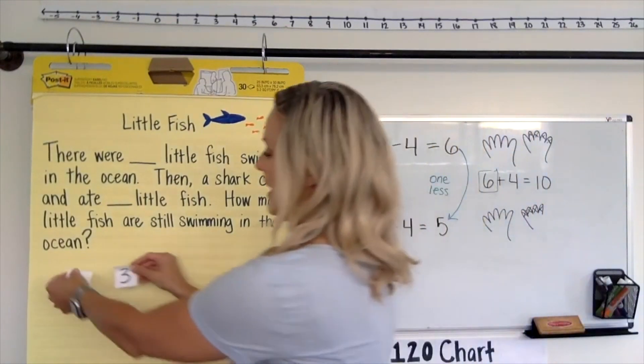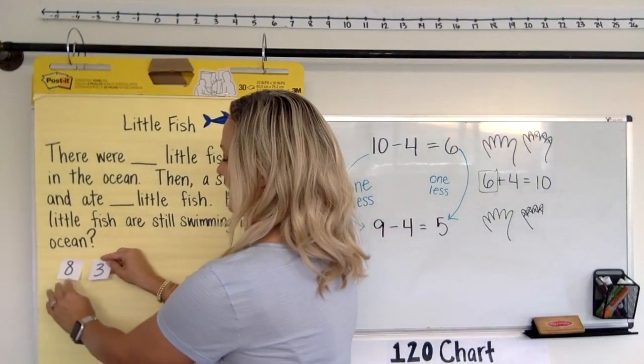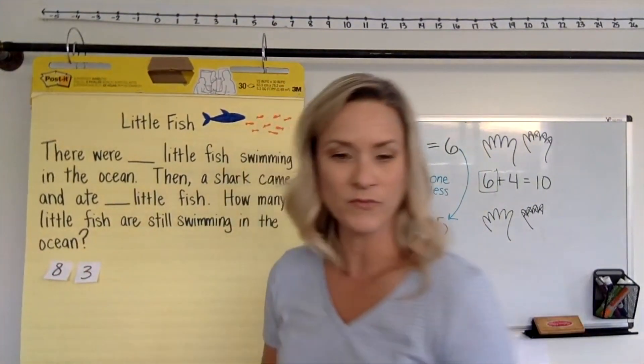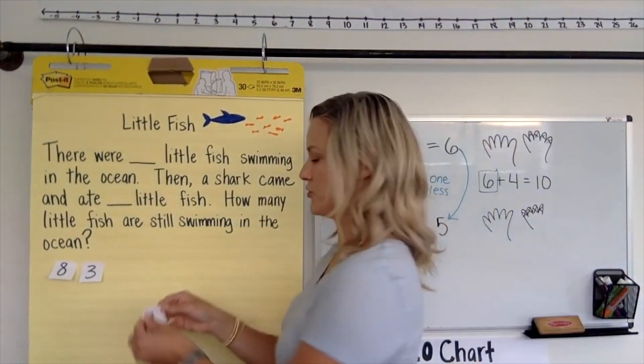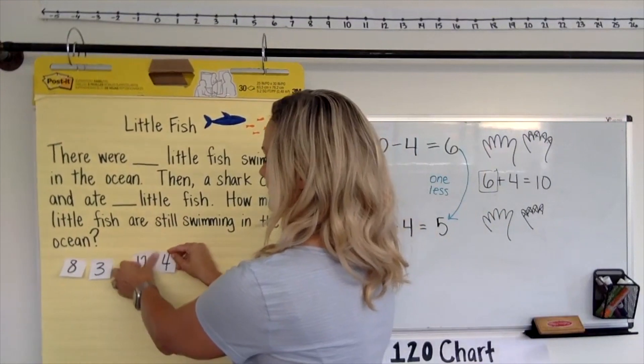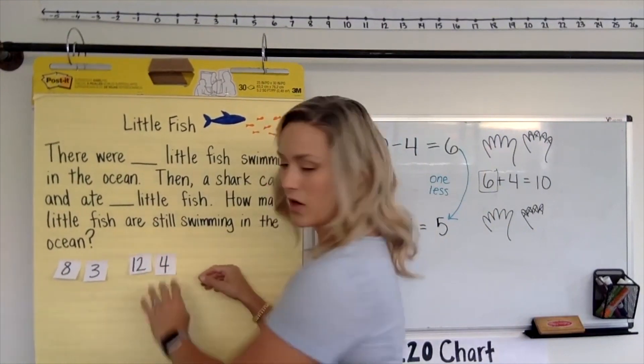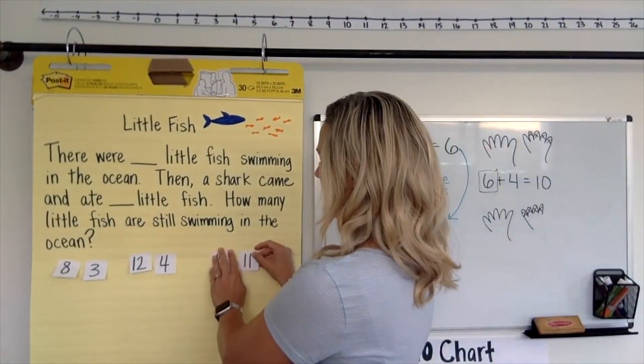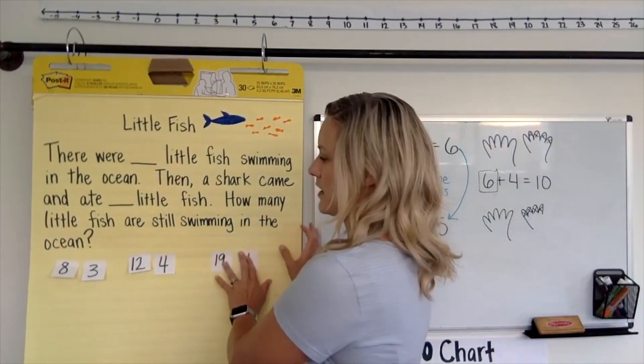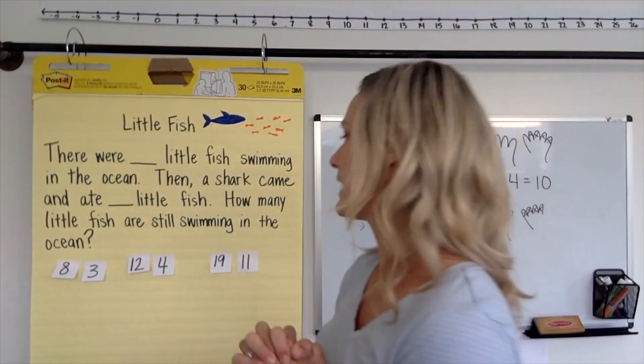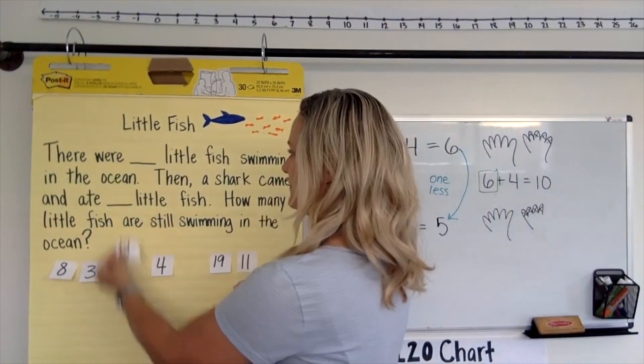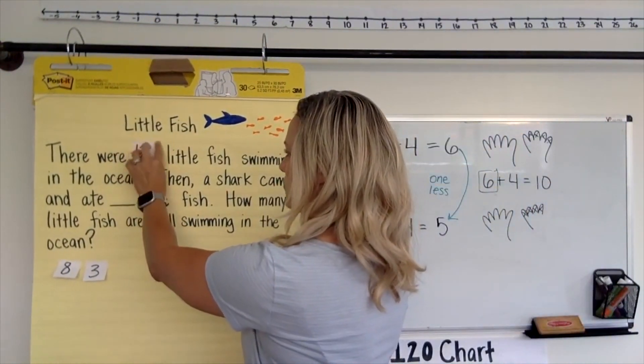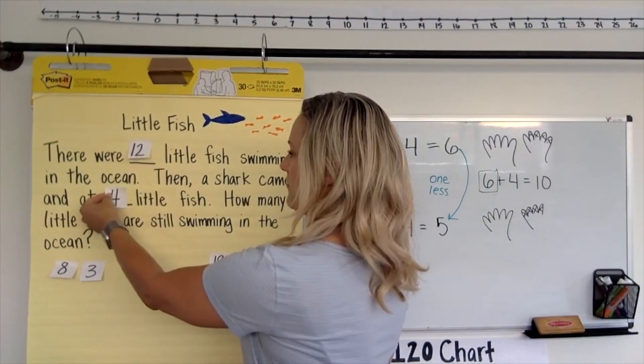All right. So maybe you'll choose 8 and 3. Or maybe you'll choose 12 and 4. Or maybe you'll choose 19 and 11. Okay. So let's pretend I choose this number set. 12 and 4.